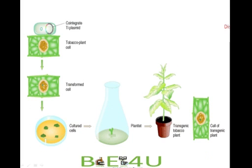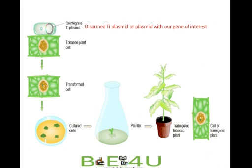This diagrammatic sketch shows a genetically engineered plasmid called the disarmed tumor-inducing plasmid, where tumor-causing genes like auxin and cytokinin are replaced with our gene of interest. This genetically engineered Agrobacterium is co-cultured with a tobacco plant cell, or protoplast. Transformed cells are then formed, from which we regenerate a plantlet, resulting in a transgenic tobacco plant carrying our gene of interest in all cells.